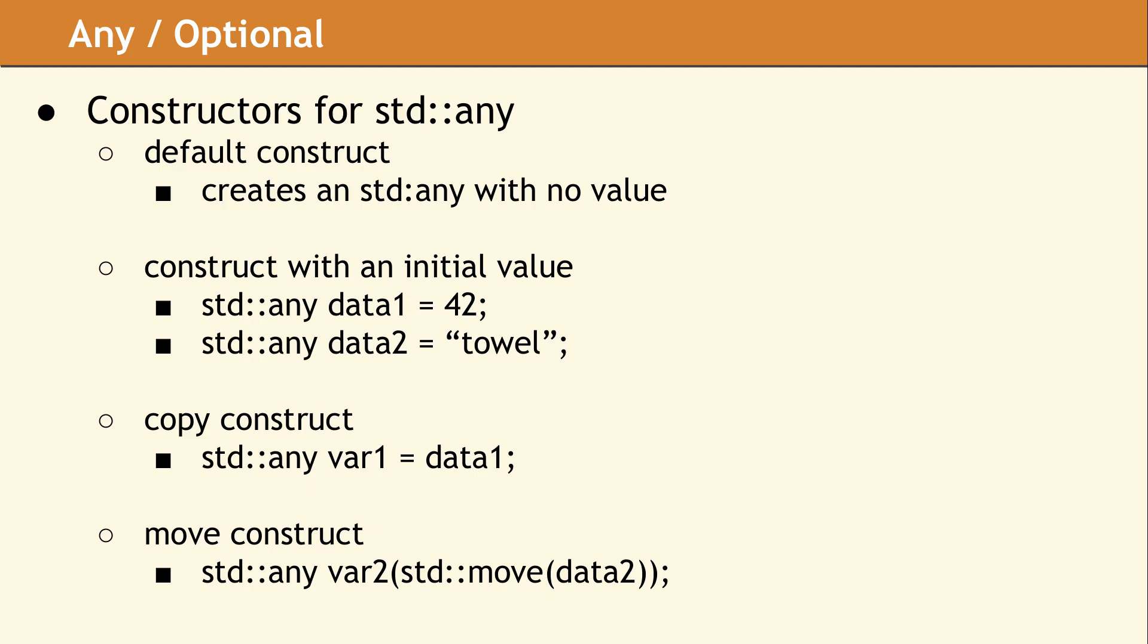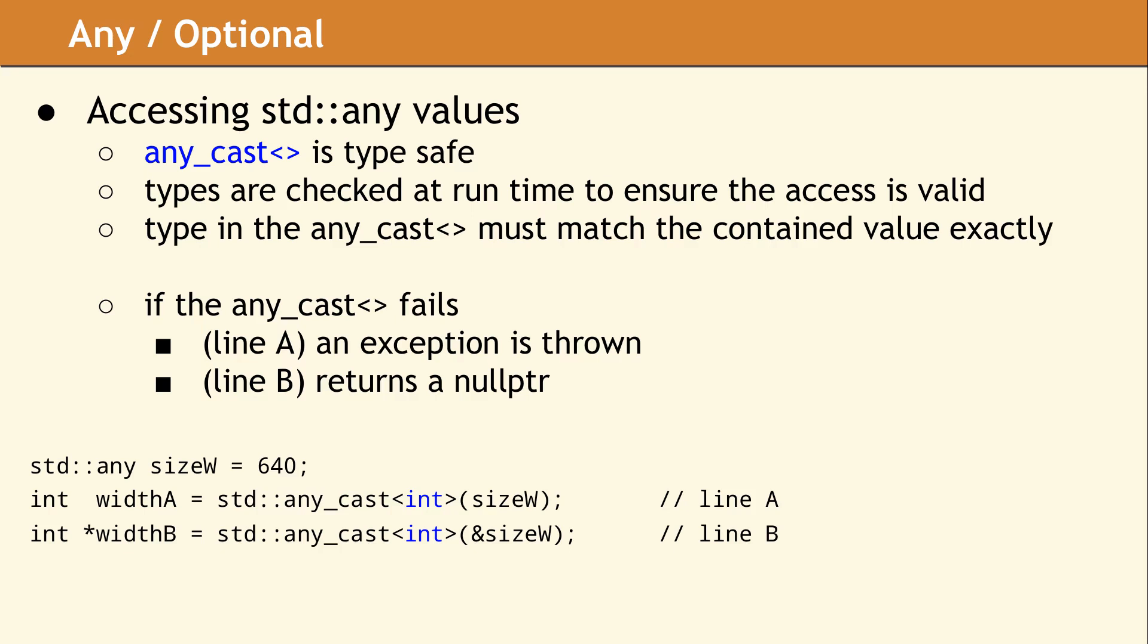Looking at our example, data1 will have the value of 42, which means this variable stores an int. If at some point later in the code someone assigns a float to data1, then the stored data type will automatically be changed to float. The Any class also supports copy construction and move construction.